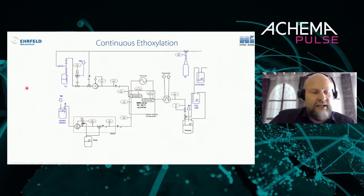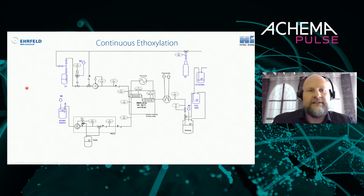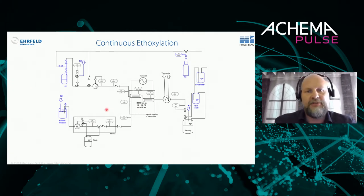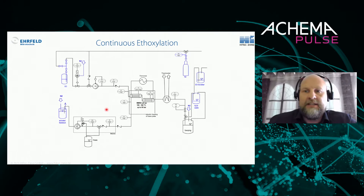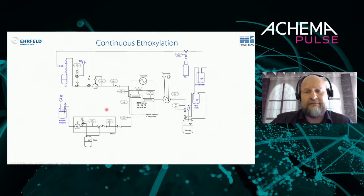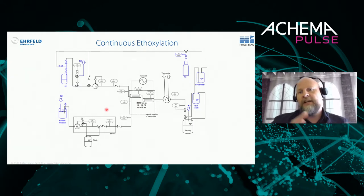The second project I'd like to describe is continuous ethoxylation, which many companies are increasingly interested in. This slide shows a basic schematic of what this means for us. We go to the customer site with our equipment — reactors, pumps, and everything — and we need to integrate that into the customer's infrastructure. Ethoxylation requires great care because ethylene oxide is very hazardous, so we need to integrate our system into the safety concept at the client side.